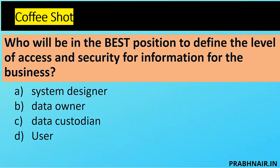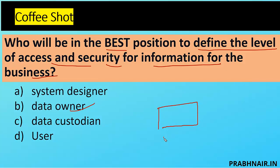Question: who is in the best position to define the level of access and security of information for the business? A system designer only designs and builds systems. A data custodian manages the data. The data owner is the one who defines access. For example, in an infosec training company, the sales owner manages leads and says 'protect this data according to GDPR because the lead is from Europe.' That sales owner is the data owner.